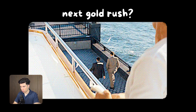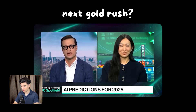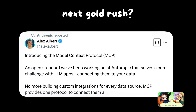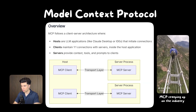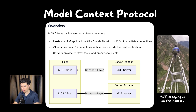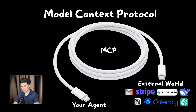What if I told you the next tech gold rush is in crypto, is in GPUs, and isn't even generative AI itself? It's the thing that connects all of these AI systems together. I'm talking about MCP, Model Context Protocol, the universal connector that's quietly becoming the backbone of the AI agent revolution. It's the new USB-C standard for AI.